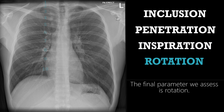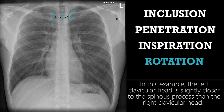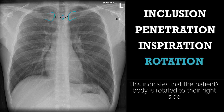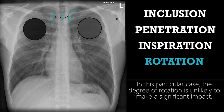The final parameter we assess is rotation. In a non-rotated image, the clavicular heads should be equidistant from the spinous processes. In this example, the left clavicular head is slightly closer to the spinous process than the right clavicular head. This indicates that the patient's body is rotated to their right side. Rotation to the right means the right lung will appear lesser than the left, and therefore blacker. In this particular case, the degree of rotation is unlikely to make a significant impact.